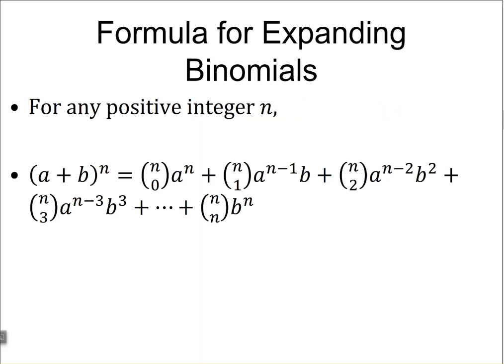So first of all, the formula for expanding binomials: for any positive integer n, where we have (a + b) to the nth power, it is equal to n above 0 times a to the nth, plus n above 1 times a to the n minus 1 times b, plus n above 2 times a to the n minus 2 times b squared, plus n above 3 times a to the n minus 3 times b cubed, all the way until we get n above n times b to the nth.